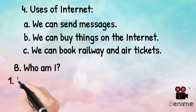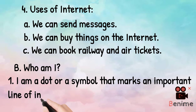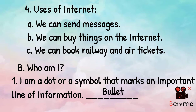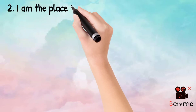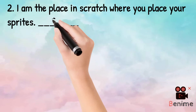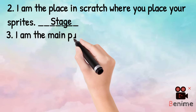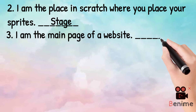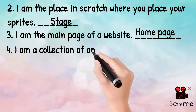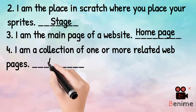Part B: Who am I? First, I am a dot or a symbol that marks an important line of information — I am a bullet. Second, I am the place in Scratch where you place your sprites — I am a stage. Third, I am the main page of a website — I am a home page. Fourth, I am a collection of one or more related web pages — I am a website.